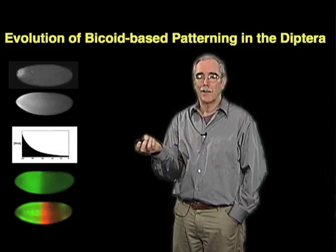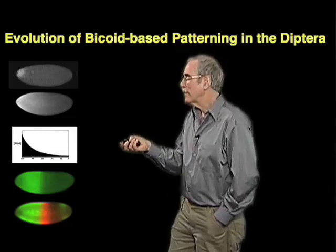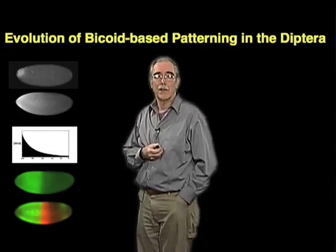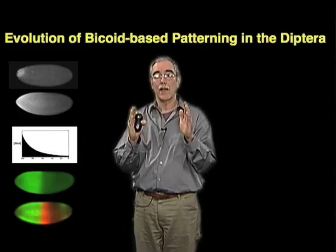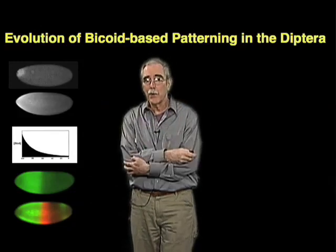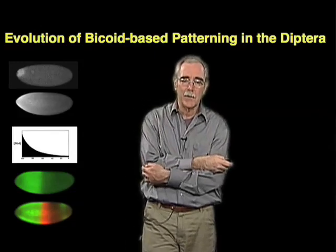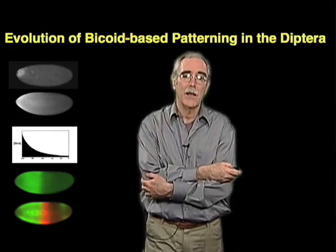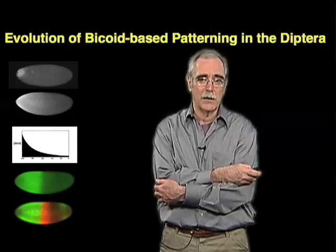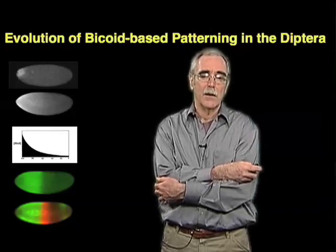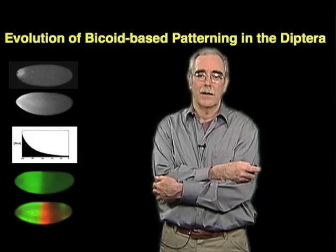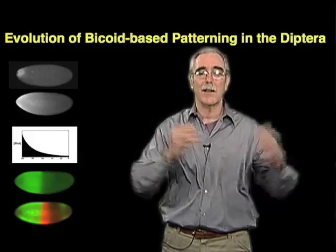If you look at fly eggs, not only are the expression patterns constant, but the actual sizes of the eggs are constant. And that's an important idea, because if you think about any of the mechanisms that we think about when we talk about how one would establish a gradient, they are very sensitive to the size of the egg.